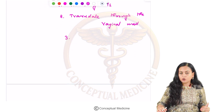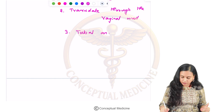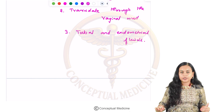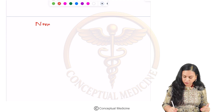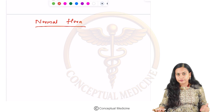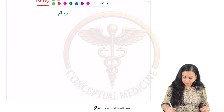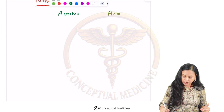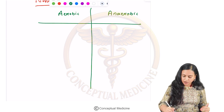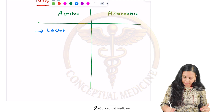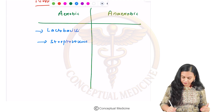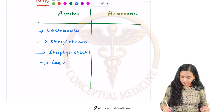This will also include tubal and endometrial fluids. Now let's discuss the normal flora present in the vagina. This includes both aerobic as well as anaerobic bacteria. Aerobic bacteria include lactobacilli, which is the most important, followed by streptococcus and Gardnerella vaginalis.